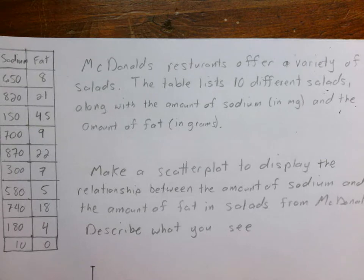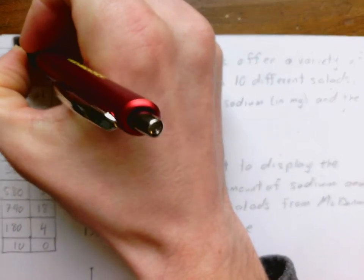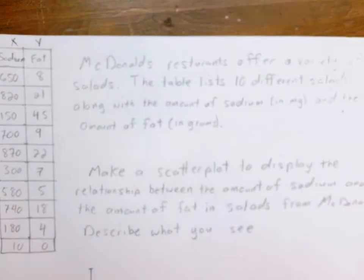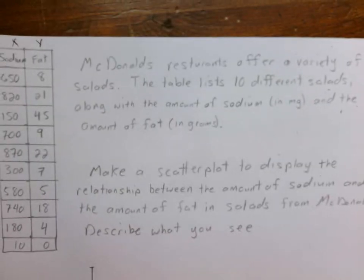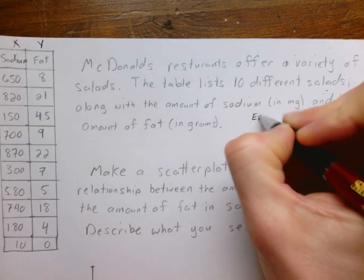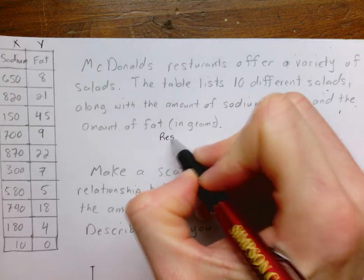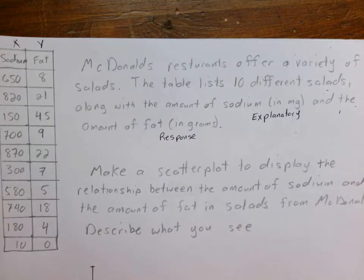We're going to need to identify our variables first. We have two things we're looking at: the amount of sodium and the amount of fat. In this particular example it's not exactly explicit which one is which, so we look at the table. In general, you're going to put the x first and y comes second. We're going to go with our explanatory variable being sodium — that's what we're going to use to predict and come up with an estimate for the amount of fat. So sodium is the explanatory variable and fat is our response variable.